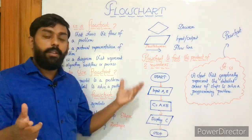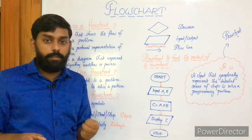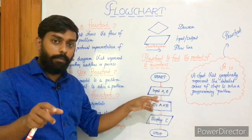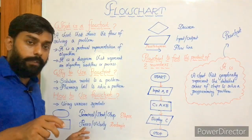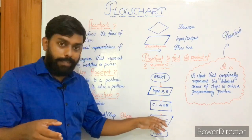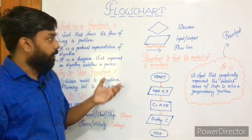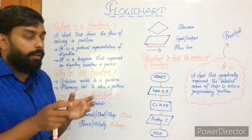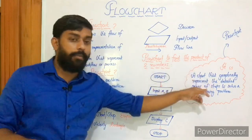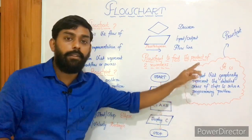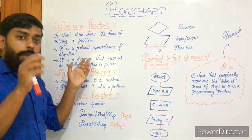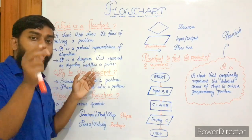Finally, stop. This is the flowchart that shows the multiplication or product of two numbers. To recap: start terminal, then input A and B in parallelogram, then C equals A into B in rectangle process, then after getting the result twelve in C, display C in parallelogram output, then stop terminal. Hope you understood the flowchart well.